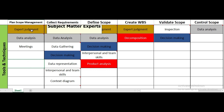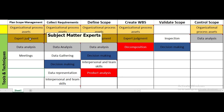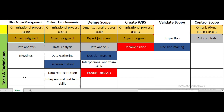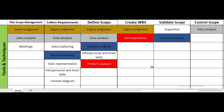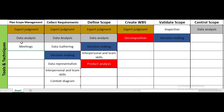Now let's look at tools and techniques. Expert judgment appears consistently across plan scope management, collect requirements, define scope, and create WBS. Expert judgment refers to subject matter experts in these different domains. Data analysis is also replicated across different project management processes, and decision-making techniques appear in collect requirements, define scope, and validate scope.